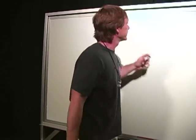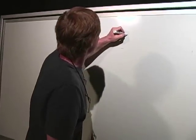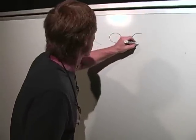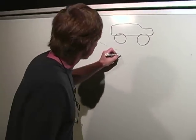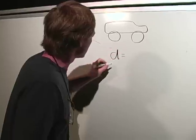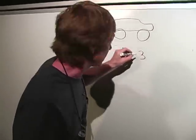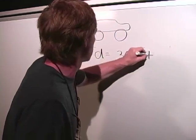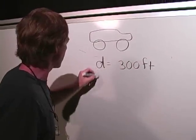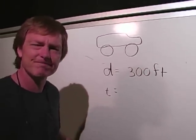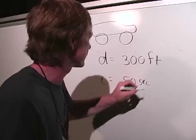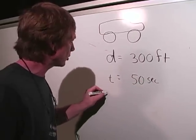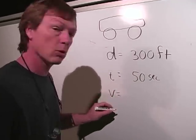So let's try some numerical examples here. An example, I've got a car. And let's say it covers a distance of 300 feet in a time of 50 seconds. So I want to know, what's the velocity?